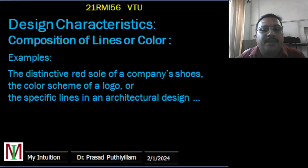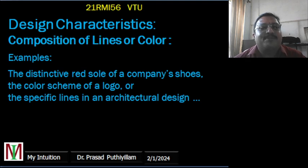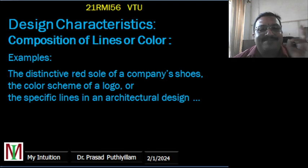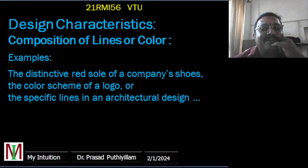Examples include the distinctive red sole of a shoe, or the color scheme of a logo. For instance, a logo made with letters and two different colors — if done by an expert — becomes a recognizable brand asset. Specific lines in an architectural design can also be protected through design rights.